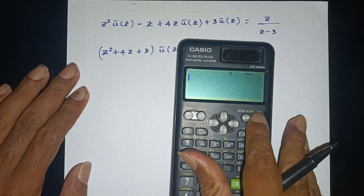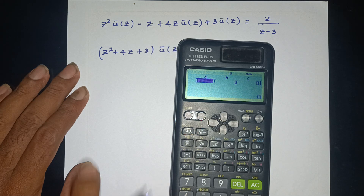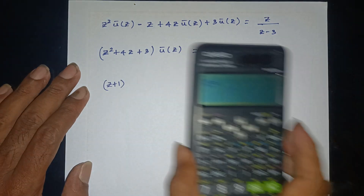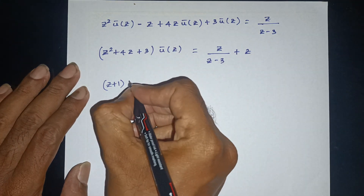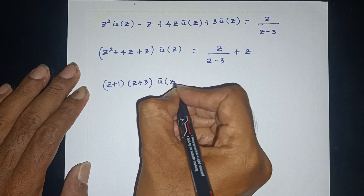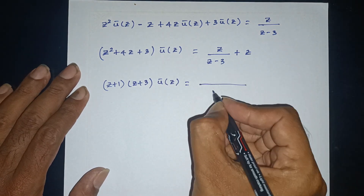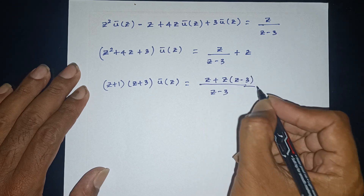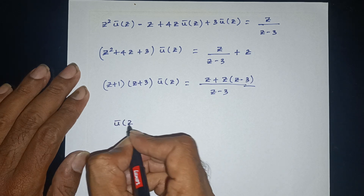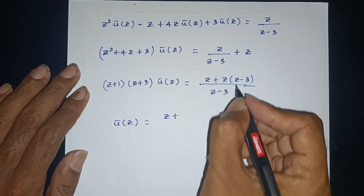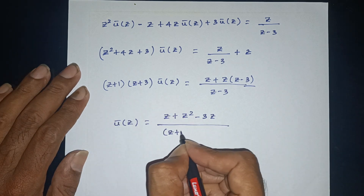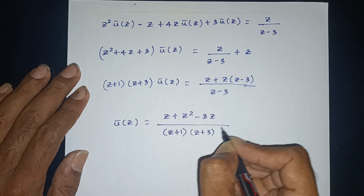We factor the denominator. z² + 4z + 3 factors as (z+1)(z+3). Taking LCM on the right side with (z minus 3): the right-hand side becomes [z(z minus 3) + z²] divided by (z minus 3). So U-bar(z) equals [z² minus 2z] divided by [(z+1)(z+3)(z minus 3)].